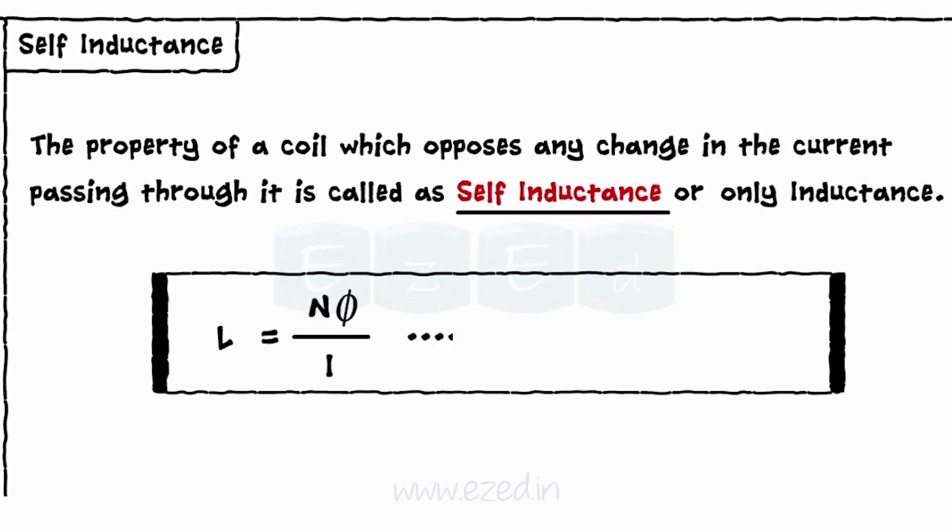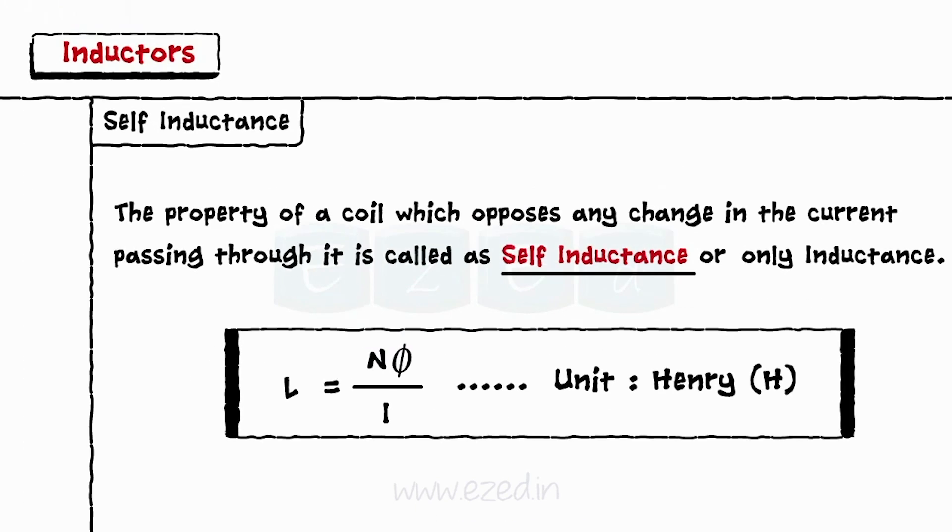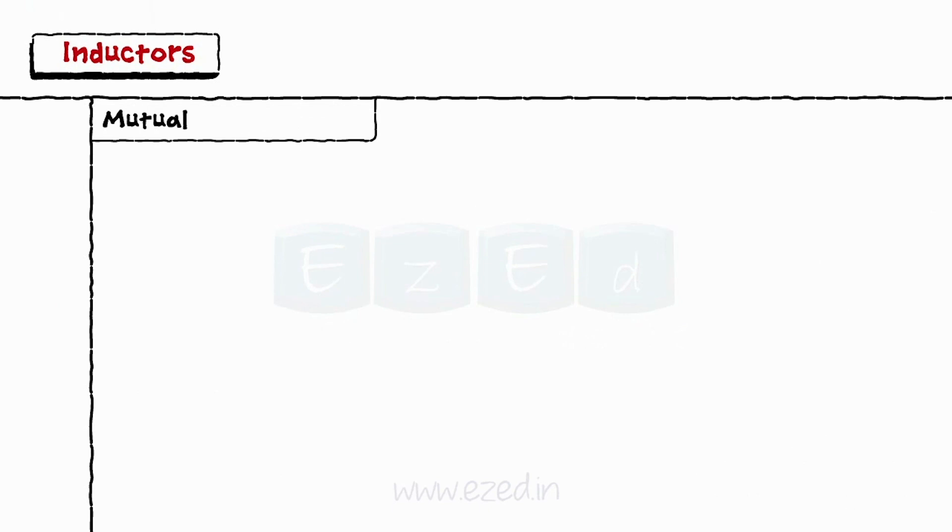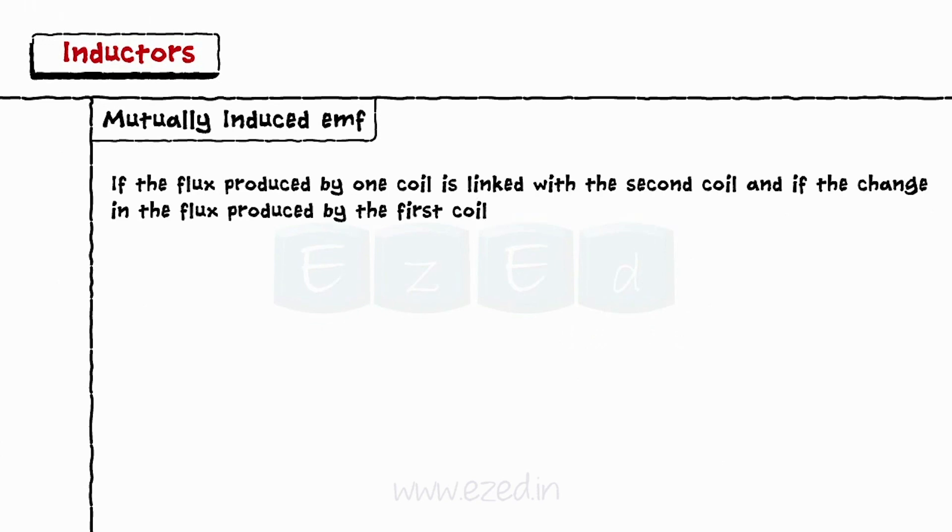The second type of EMF is mutually induced EMF. If the flux produced by one coil is linked with the second coil and if the change in the flux produced by the first coil induces the EMF in the second coil, then such an EMF is called as a mutually induced EMF.